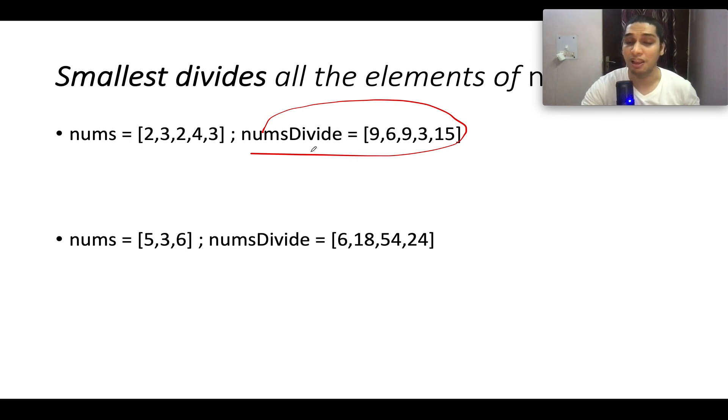So in the first go, we have to identify the maximum element that divides all the elements that are present in nums divide array, and that would be nothing but the GCD of the entire array. Let's try and identify the GCD of 9 and 6 first. The GCD comes out to be 3. Then the GCD of 9 and 3 is 3, 3 and 3 is 3, and 3 and 15 is again 3. So we have successfully identified the GCD of the nums divide array which is 3.